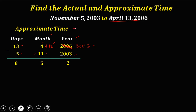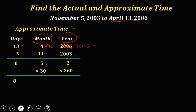For approximate time: 30 days per month and 360 days per year. So 8 days, plus 5 months times 30 equals 150, plus 2 years times 360 equals 720. Adding all together: 8 plus 150 plus 720 equals 878 days for the approximate time.